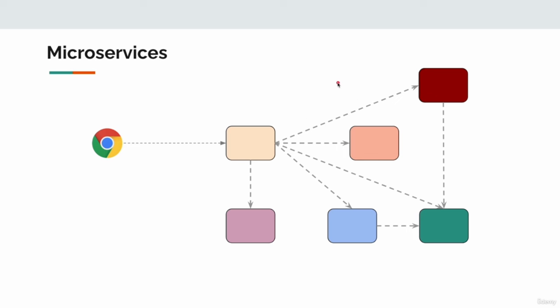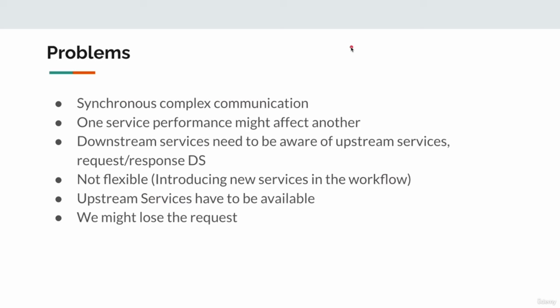Also, in synchronous communication, each service has to be available. If one of these services is not available and you are not handling that properly, then we might throw a 500 internal server error to the client, and at that point we simply lose the client request. These are the main problems: synchronous complex communication, one service's performance affecting another, downstream services needing to be aware of upstream service locations and data structures, inflexibility when introducing new services, and the risk of losing requests due to 500 errors.